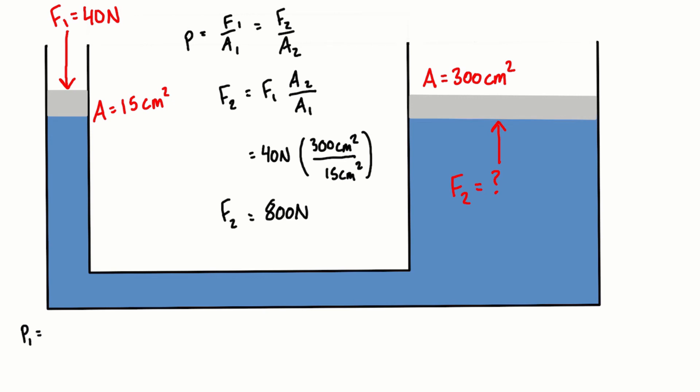So P1 is going to be equal to F1 over A1, and we're going to want units of pascals which is newtons per meter squared. So we're going to have to multiply this by unity or just the conversion factor between centimeters squared and meters squared which is 10,000 to 1. And we're going to find that this is equal to 26,667 pascals or we can kind of round that to 26.7 kilopascals.